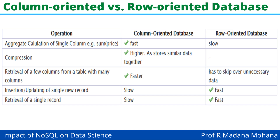For insertion or updating of a single new record, it is slow in column-oriented databases whereas fast in row-oriented databases. For retrieval of a single record, it is slow in column-oriented databases and fast in row-oriented databases. These are all the comparisons of column-oriented versus row-oriented databases.